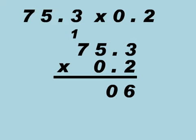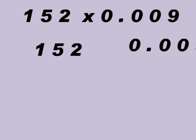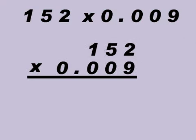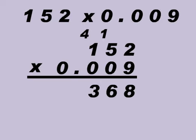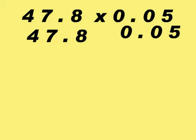Decimal Places of the Decimals. Apply it to the product found — if the decimal places equal three, then we look at the product found and count from the right three places. That's the product of the decimals.